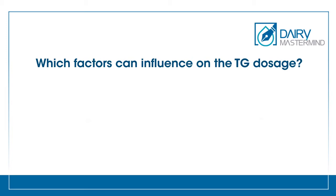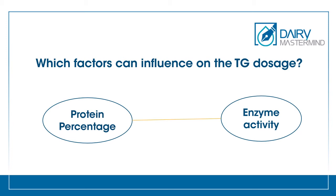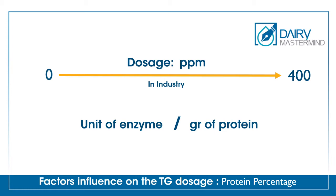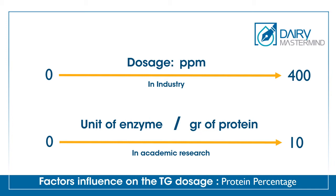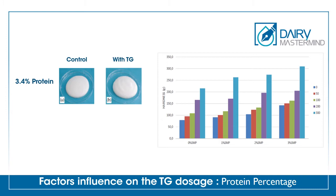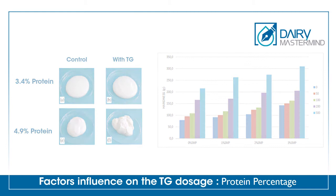What factors can influence the TG dosage? To reach the desirable texture, we should consider the amount of protein in the product and the enzyme activity. In industry, dosage is shown as percentage or ppm. In academic research, the ratio is expressed as units of enzyme per gram of protein, tested between 0 to 10. The higher the protein content, the more enzyme should be used to reach a constant amount of cross-linking. By increasing the percentage of SMP to increase protein content, texture hardness will increase. Also, by increasing the TG enzyme dosage to a certain extent, texture properties will improve too.